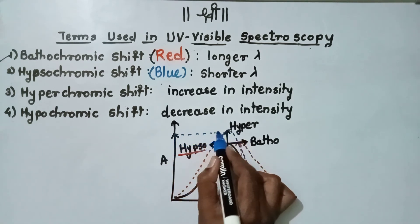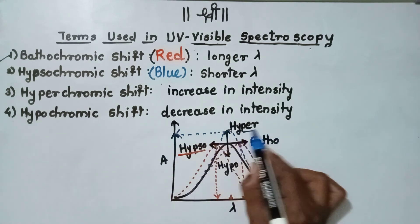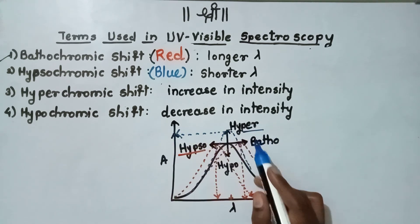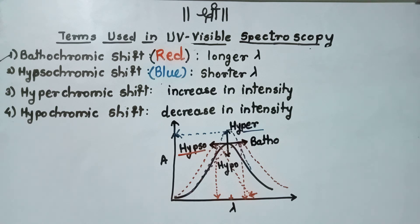When the intensity of spectra increases, it is called as the hypochromic shift. If there is a decrease in intensity of spectra, then it is called as the hypochromic shift accordingly. There are various effects like solvent effect, conjugation effect, as well as resonance effect, which affect the shift in spectra.